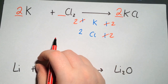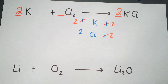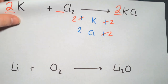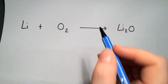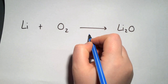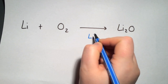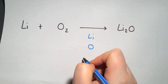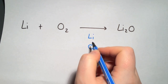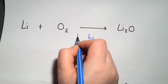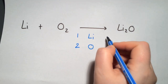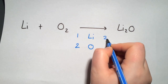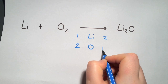The next example we're looking at lithium and oxygen. Again, write down the elements that you have: lithium and oxygen. Count up what you have on each side — we have one lithium and two oxygens on the left, with two lithiums and one oxygen on the right.